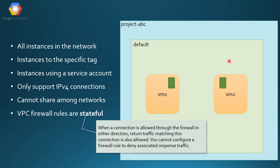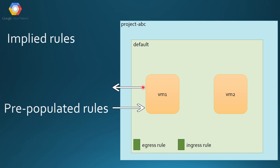Stateful means that when a connection is allowed through the firewall in either direction, return traffic matching that connection is also allowed. For example, if you have a firewall rule for VM1 with an egress to the internet and you're talking to www.google.com from that VM, the response from Google's web server is also allowed to the VM — you do not have to explicitly create another rule to allow that response.